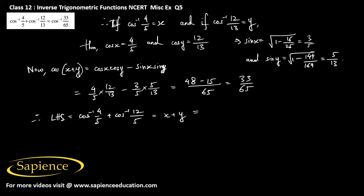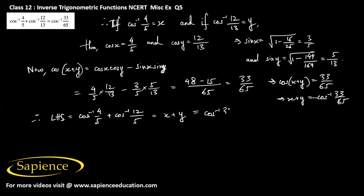Since we got cos of x plus y equal to 33 by 65, therefore x plus y equals cos inverse of 33 by 65, which is equal to the right hand side. Hence proved. Hope you have understood the concept, thank you.